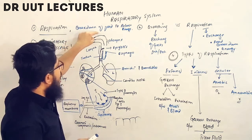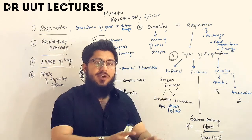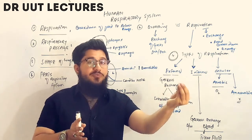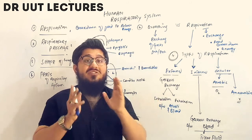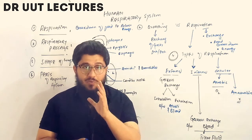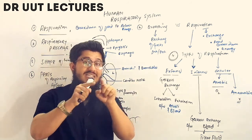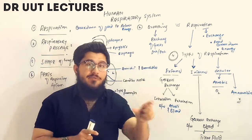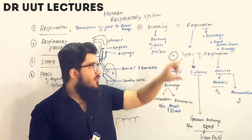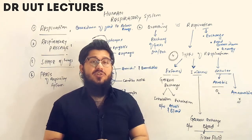What is respiration? Simply, it is the breakdown of food to release energy. We break food into smaller components in order to obtain energy. Now, some people include the term 'oxygen' when defining respiration. Remember: if you add oxygen to this definition, it becomes specific to aerobic respiration only, since we have three types of respiration.